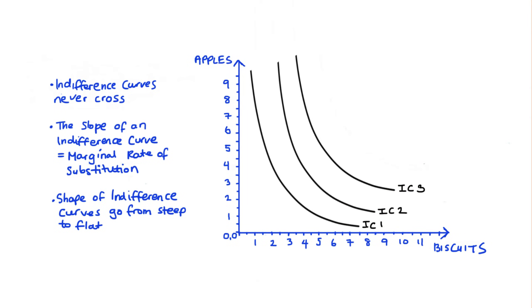In the remainder of the video, I want to discuss three additional features of indifference curves. The first feature is that indifference curves should never cross. The second feature concerns the interpretation of the slope of our indifference curves, which is called the marginal rate of substitution. The last feature concerns the shape of our indifference curves.